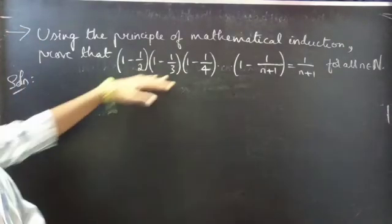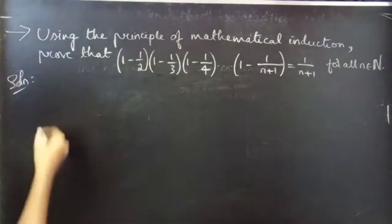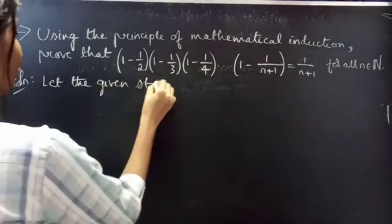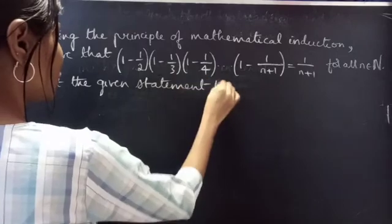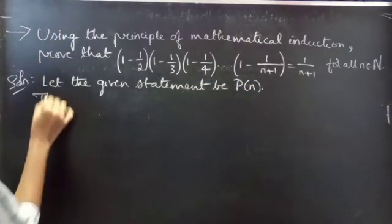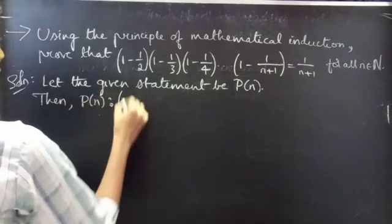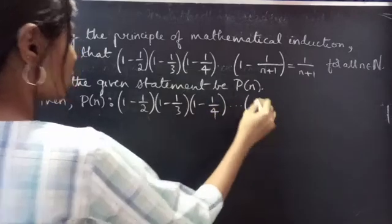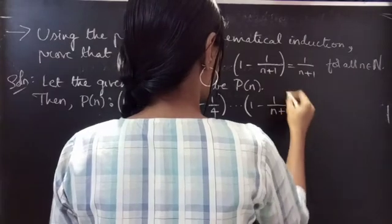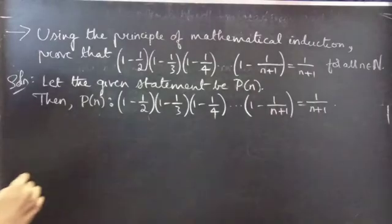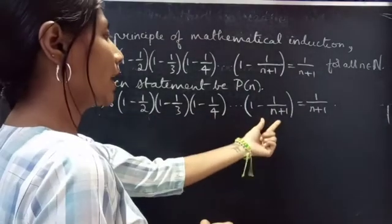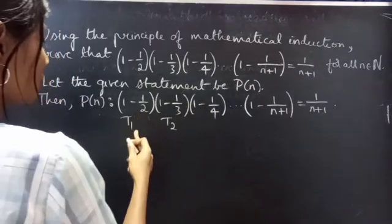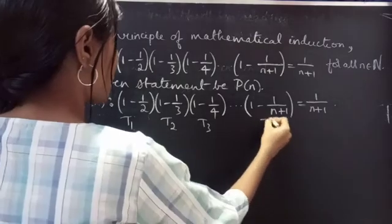We have to prove that the given statement is true for all n belonging to natural numbers. Let the given statement be P(n), where P(n) states that (1 - 1/2) × (1 - 1/3) × (1 - 1/4) × ... × (1 - 1/(n+1)) = 1/(n+1). Here you have 1, 2, 3, and so on — n terms. The first term is T1, second term T2, T3, and so on up to Tn.